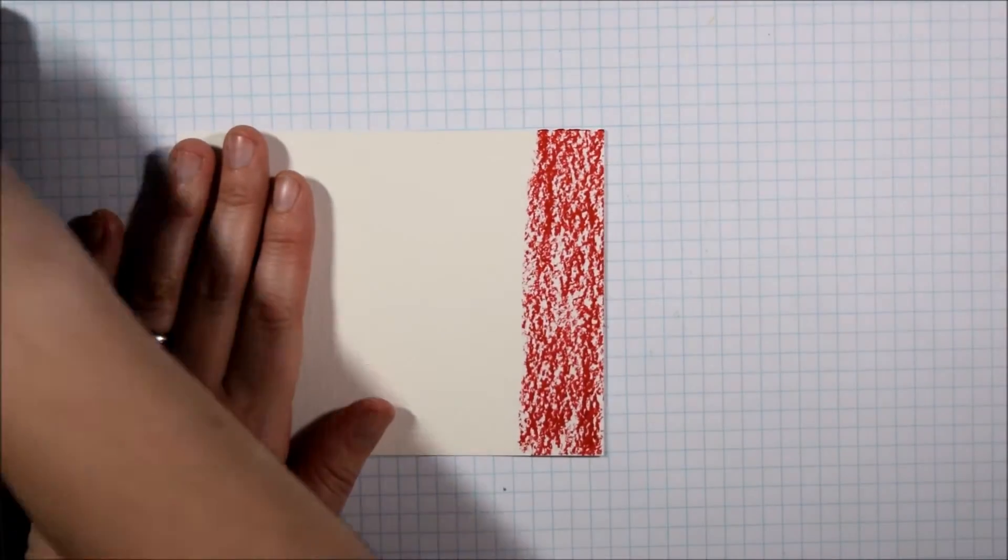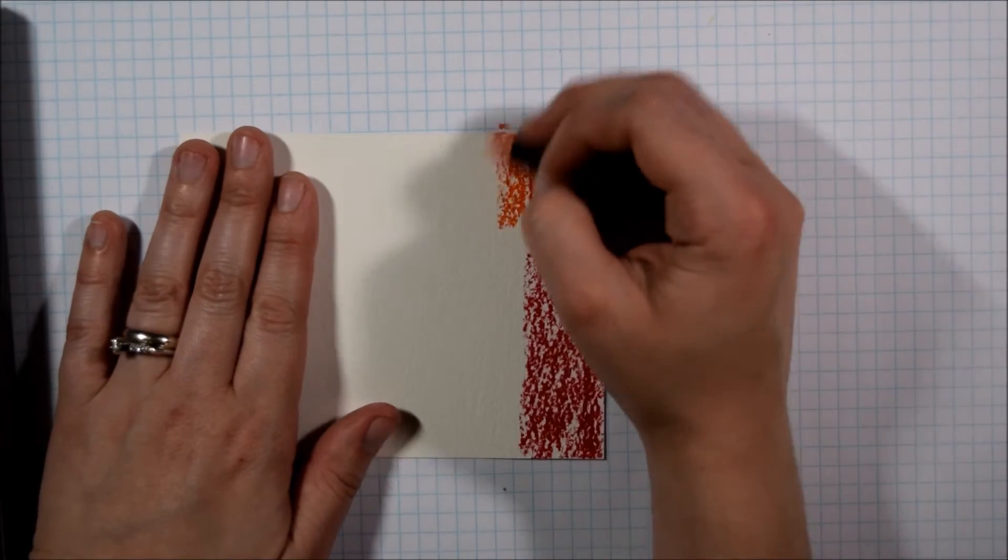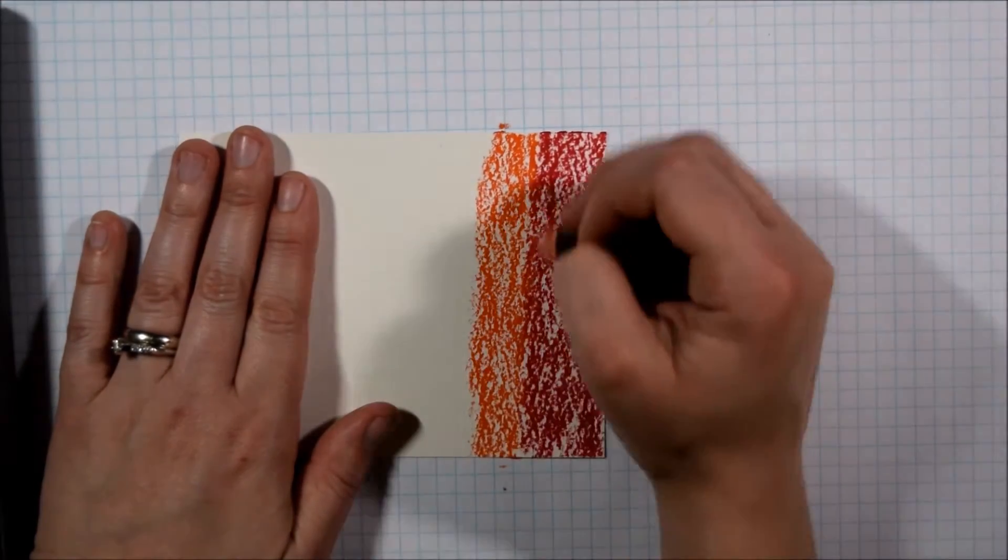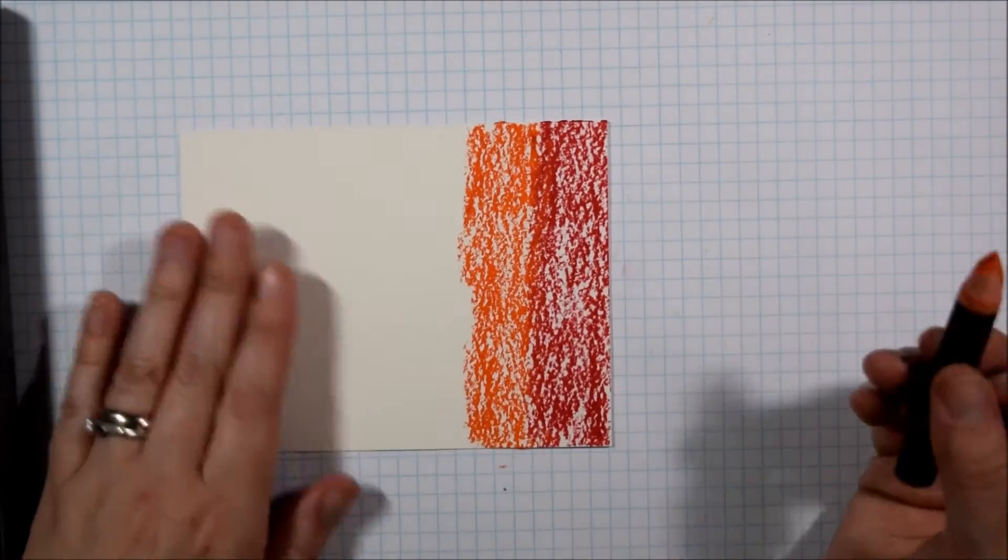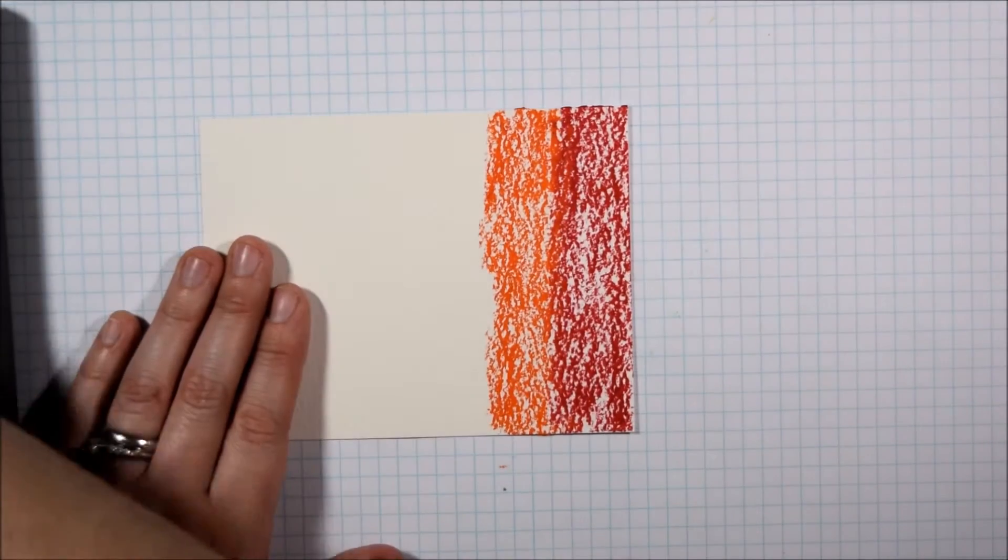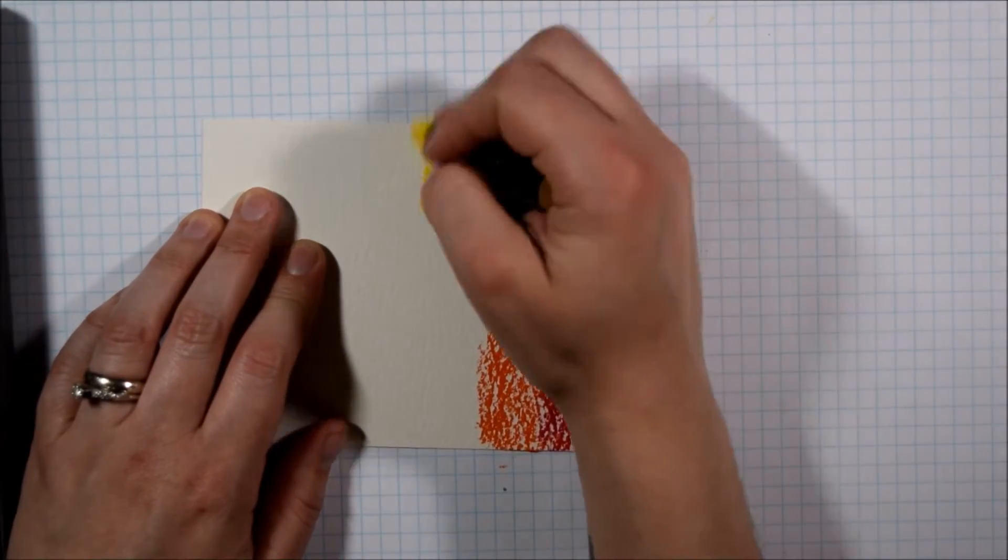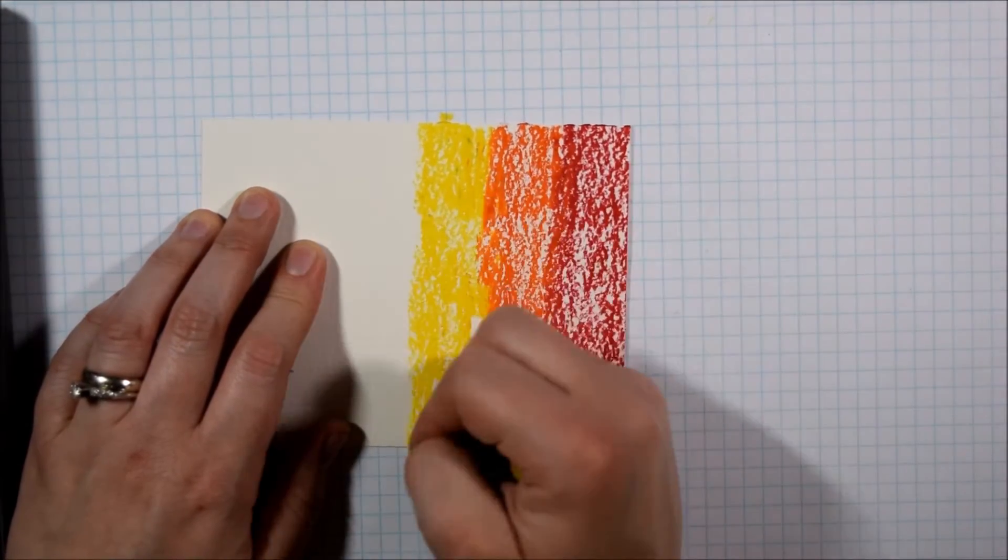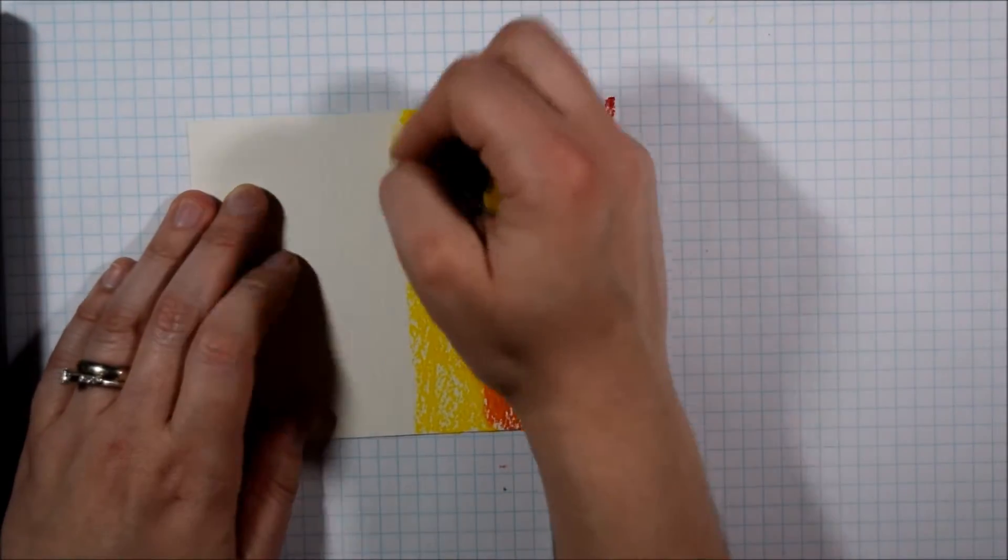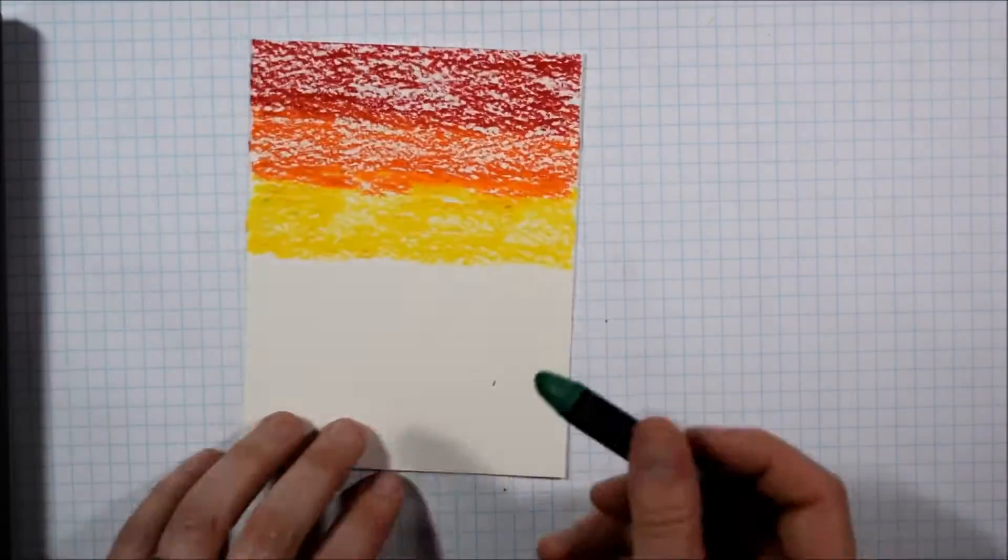So here I have a piece of Canson 140 pound watercolor paper. I do find it helpful to work on watercolor paper for this technique as they are water soluble and also to work on a nice thick paper because you are going to layer a lot of things onto it and you want to really be able to hold up to that.